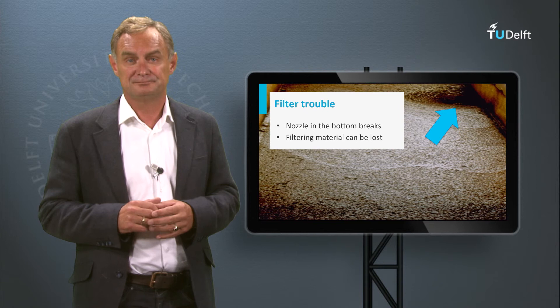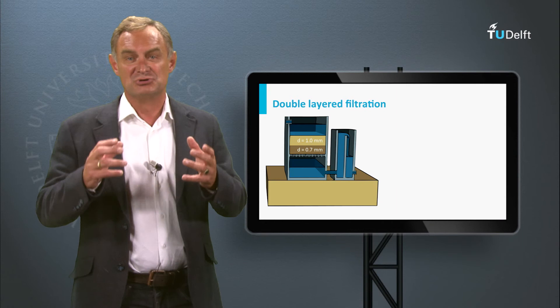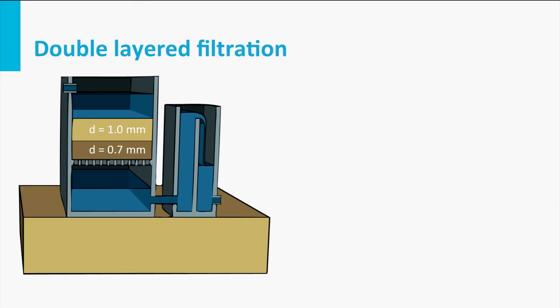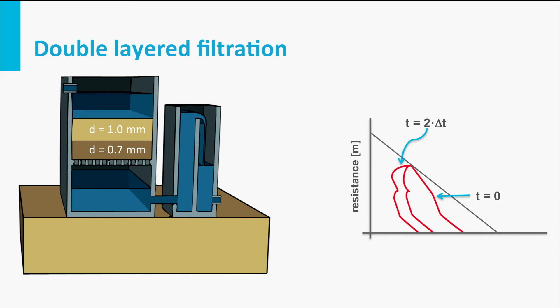In practice, not only single-layer rapid sand filters are used. Different types of rapid sand filters can be distinguished. One example is the double-layer filter: on top of the sand bed, a lighter and coarser anthracite layer is added to increase the accumulation capacity for suspended solids, decrease filter bed resistance, and allow higher filtration velocities and longer filter run times.